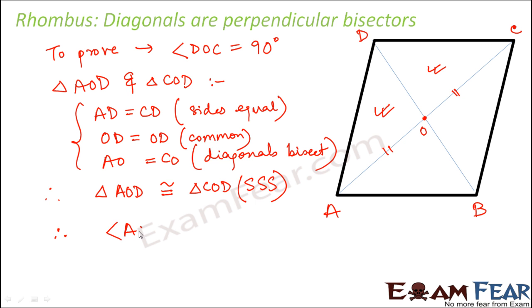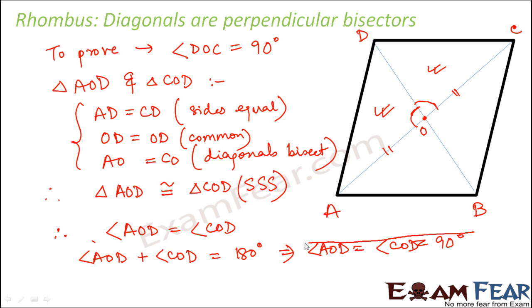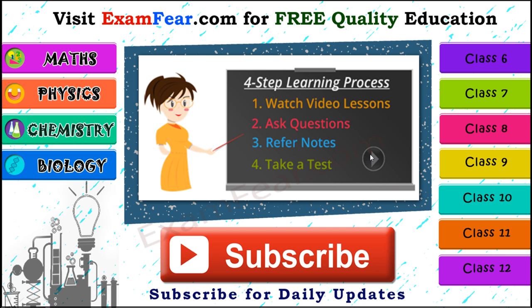Now since these two triangles are congruent, therefore their corresponding sides and angles will also be equal. Therefore we can say that angle AOD will be equal to angle COD. But at the same time we see that angle AOD plus angle COD together form a straight line which is 180 degrees. Therefore angle AOD equals angle COD equals 180 degrees by 2, that is 90 degrees. So that's how we prove that the diagonals are perpendicular bisectors of each other in a rhombus. Thank you.